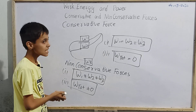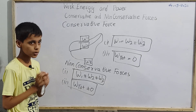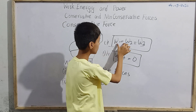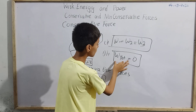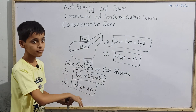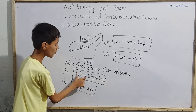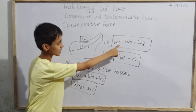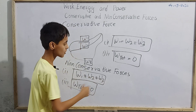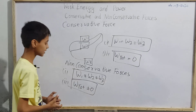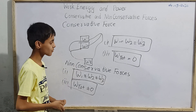Conservative forces and non-conservative forces are just opposite terms. In conservative forces, all work done in the given diagram are equal and the total work done W_total equals zero. In non-conservative forces, all work done are unequal and the total work done W_total is not equal to zero.